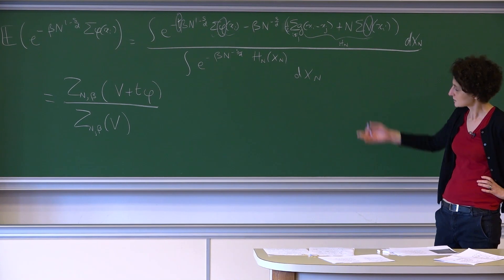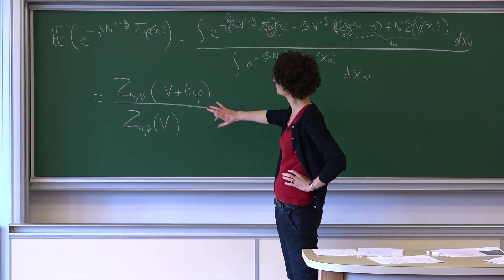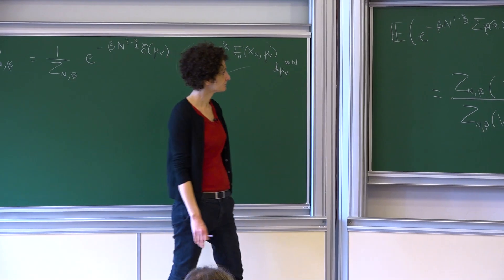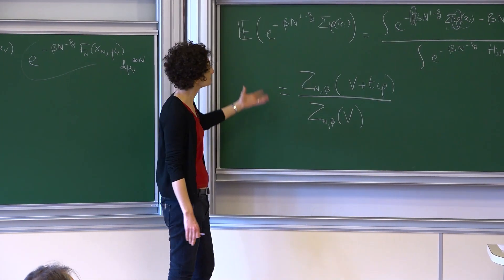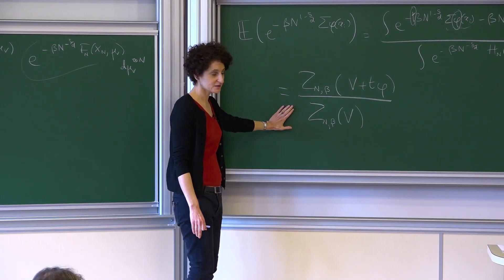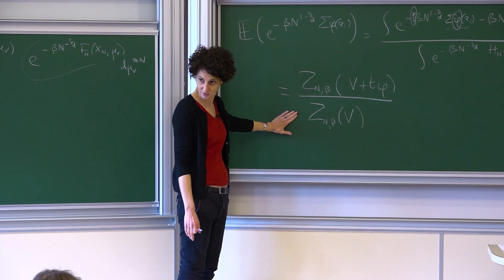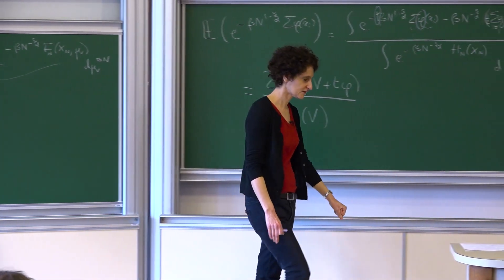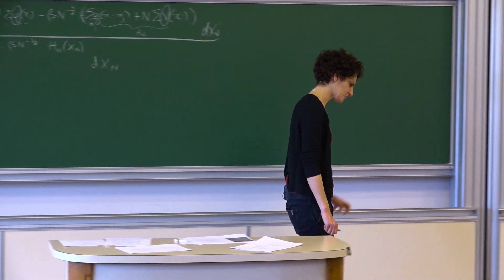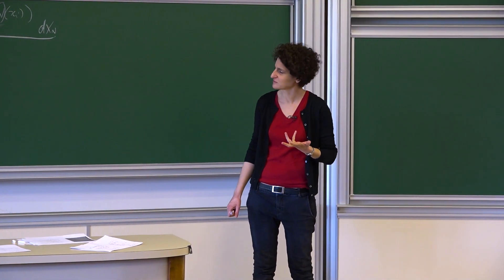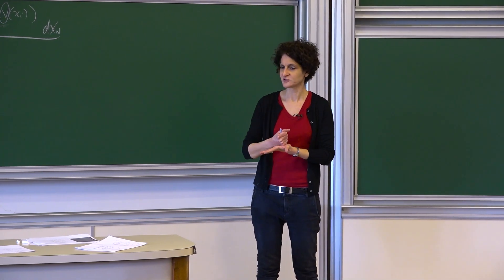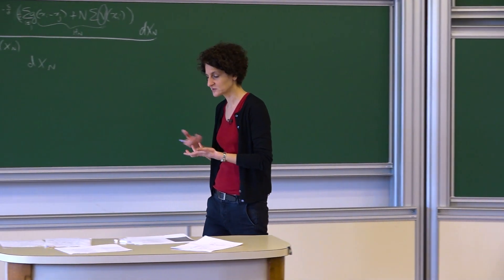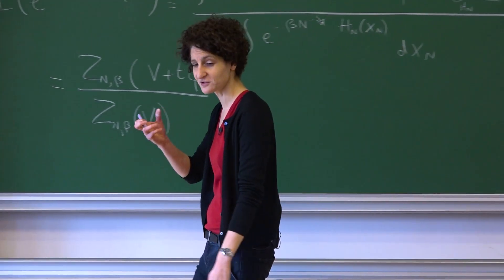This method appears for the first time in a paper of Johansson in the case of the 1D log gas, and it's a quite natural first step. But now you have to compute the ratio of partition functions — it boils down to evaluating a ratio of partition functions for different external potentials. Physically, you can view it as applying a force phi to your system and trying to understand how the system responds to that force, which indirectly gives information on the fluctuations.